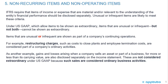Regarding non-recurring items and non-operating items: IFRS requires that items of income or expense that are material and relevant to the understanding of the entity's financial performance should be disclosed separately. Unusual or infrequent items are likely to meet these criteria. Under U.S. GAAP, items that are unusual or infrequent but not both cannot be shown as extraordinary. Items that are unusual or infrequent are shown as part of a company's continuing operations — for example, restructuring charges such as costs to close plants and employee termination costs are considered part of ordinary activities.